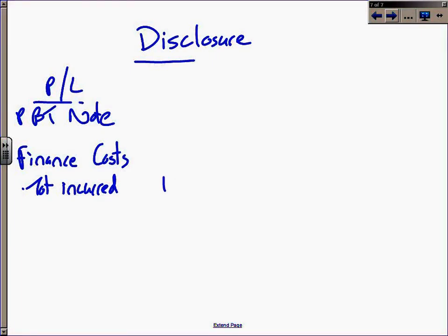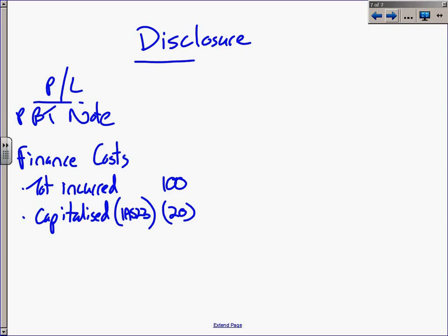Disclosure is going to be pretty straightforward here. In the statement of profit or loss, in your profit before tax note, you will have your finance costs, which will be made up of the total incurred, which in our little question earlier was 100. You will then subtract the amount that was capitalized in terms of IAS 23, and you will end up with the total expense that goes through profit and loss.